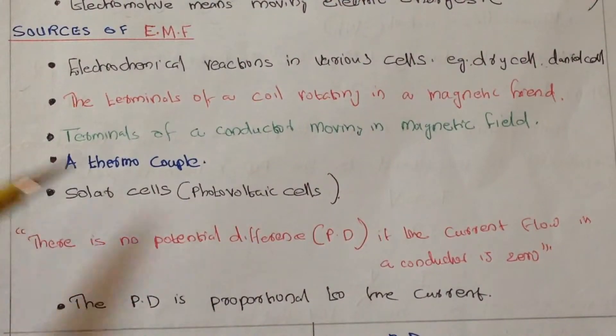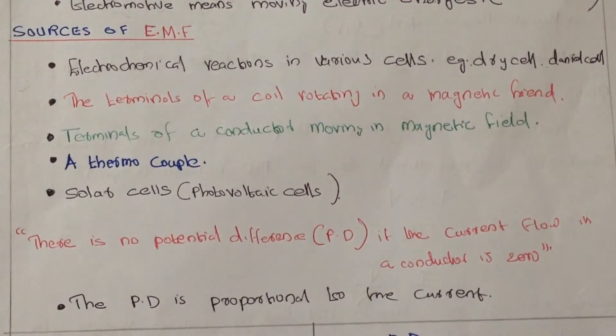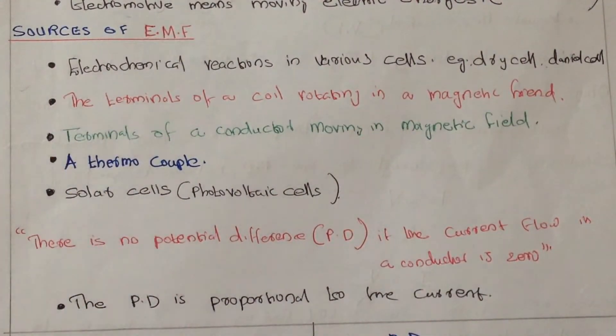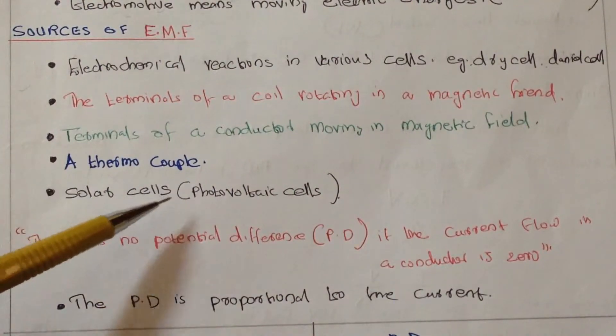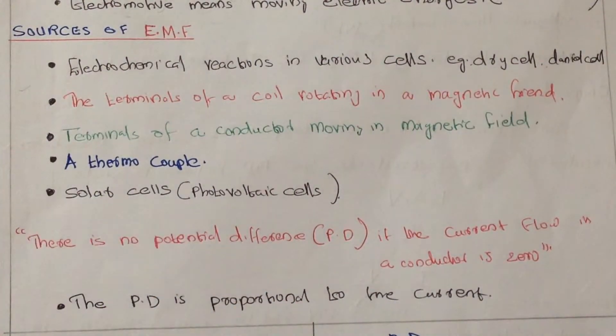And also in a thermocouple, this process happens. This is also one of the sources of EMF. And in solar cells, photovoltaic cells, EMF is produced from light energy.